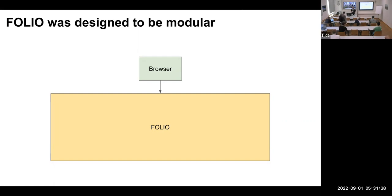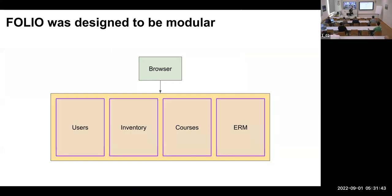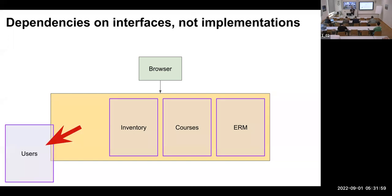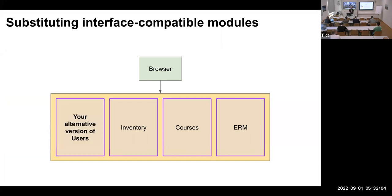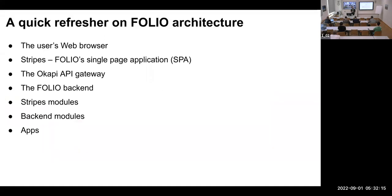This is the simplified version I show to people who are not developers. FOLIO is a user of the browser, and within the FOLIO box there are a bunch of conceptually separate modules. The idea is that you can do things like swapping them out — so if your university already has a perfectly good patron registration scheme, you can substitute in a plug-compatible module. That's always been the idea, and one of the big disappointments has been how little that flexibility has actually been used until now.